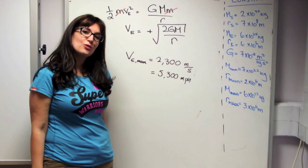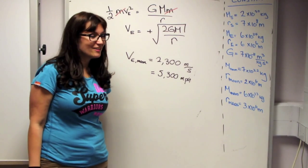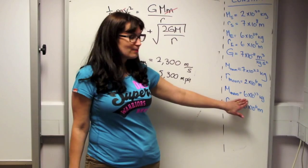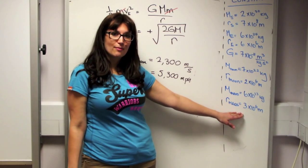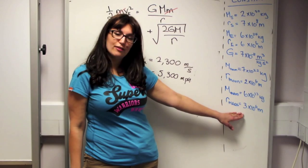So why don't you try working out the escape velocity of Mars if the mass of Mars is about 6 times 10 to the 23 kilograms. And the radius of Mars is about half of that of the Earth.